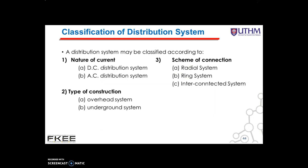Next is the classification of distribution systems. A distribution system may be classified according to: first, the nature of the current; second, the type of construction; and third, the scheme of connection. According to the nature of current, it may be classified as DC distribution system and AC distribution system. Nowadays, AC system is universally adopted for distribution of electric power because it is more simple and economical than the DC distribution system.